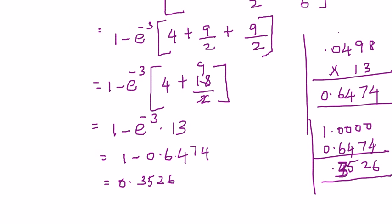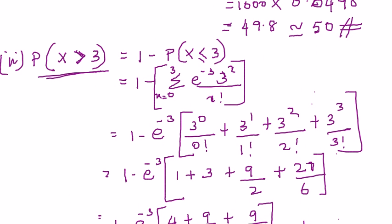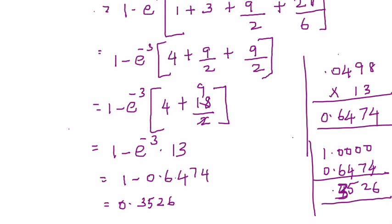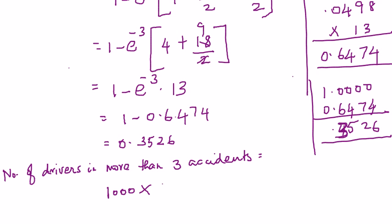So, this 0.3526 is the probability that you will have more than 3 accidents in a year. But if we have to find out the number of drivers involved in more than 3 accidents, it would be 1000 into 0.3526 which is 352.6 approximated to 353.